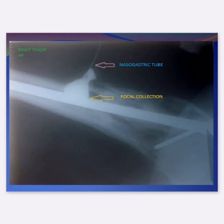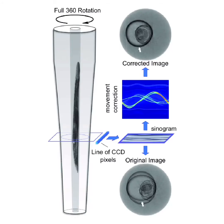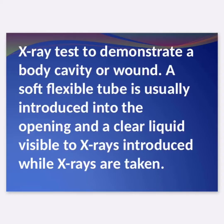This image represents the Sinogram procedure. It is an x-ray test to demonstrate a body cavity or wound. A soft flexible tube is usually introduced into the opening, and a clear liquid visible to x-rays is introduced while x-rays are taken.